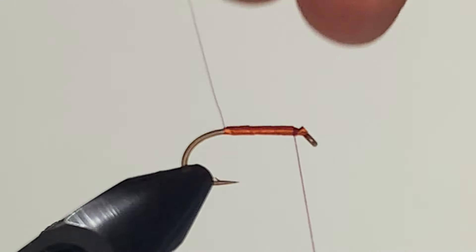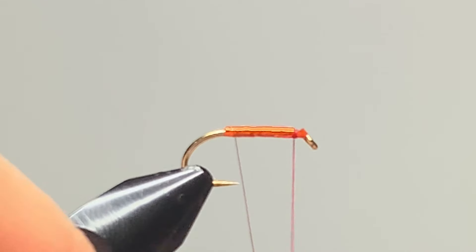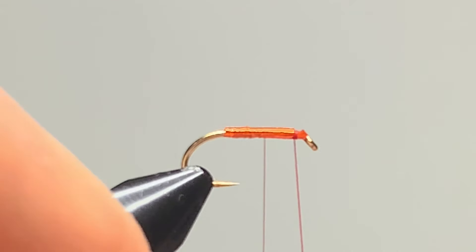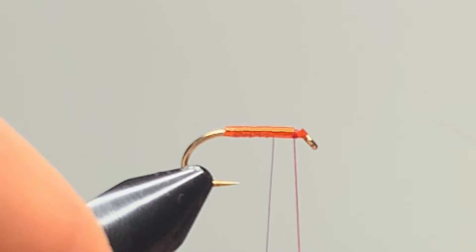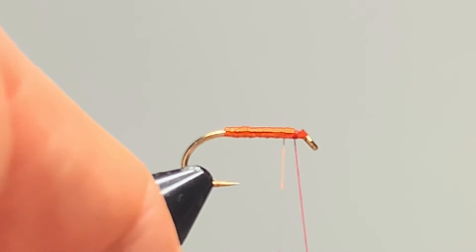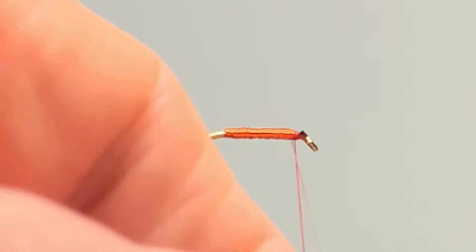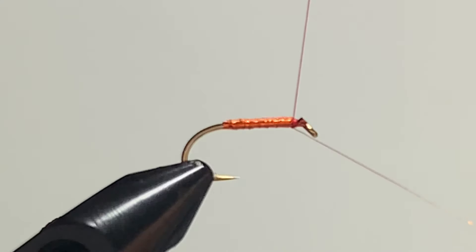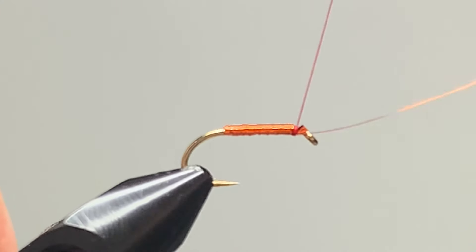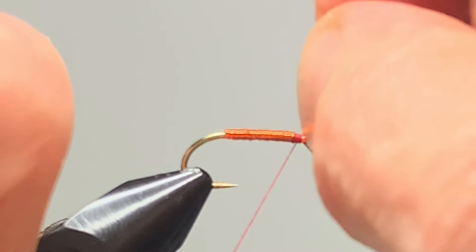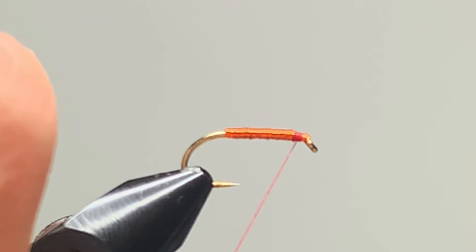On with the copper wire as your rib. It's a nice color, that orange tinsel. It has a copper tone to it, but it's actually orange in color. Lock home your tinsel and break away the wire.